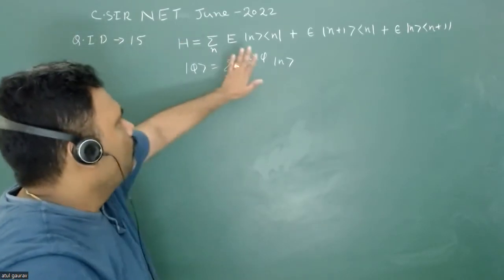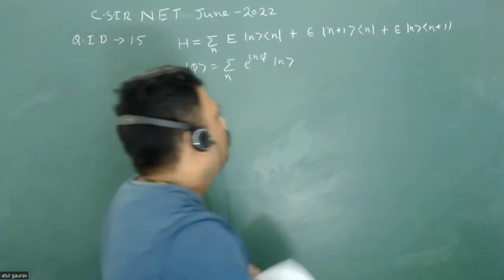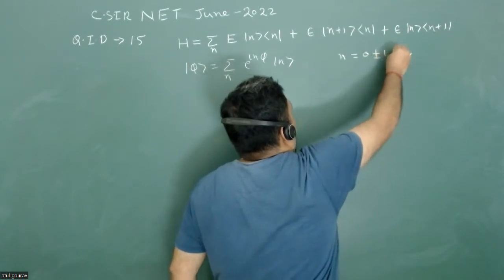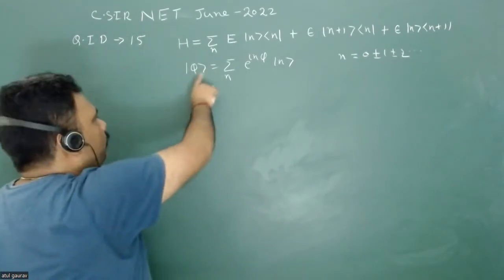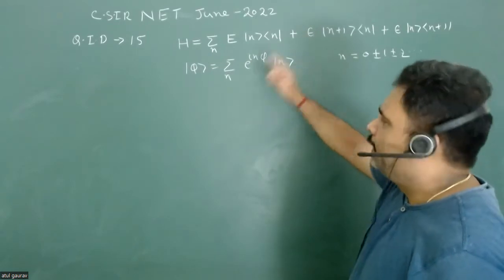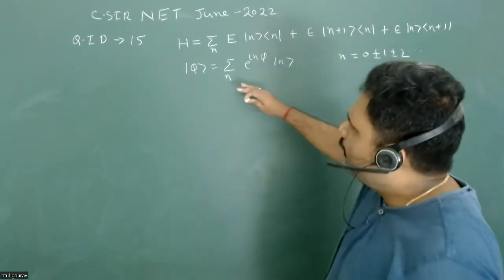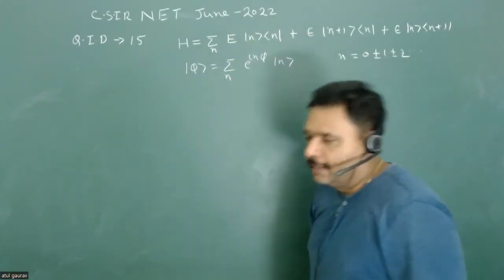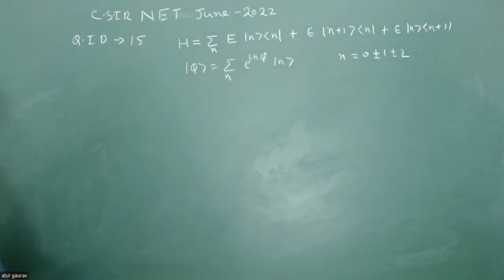There is a Hamiltonian written in an orthonormal basis of |n⟩ kets, where n can be equal to 0, ±1, ±2, and so on. A ket |φ⟩ is defined as a summation of e^(inφ)|n⟩. We have to calculate the eigenvalue if |φ⟩ is the eigenstate of this Hamiltonian H.